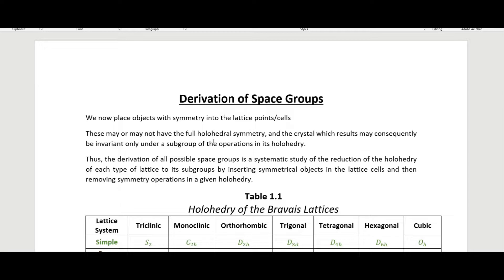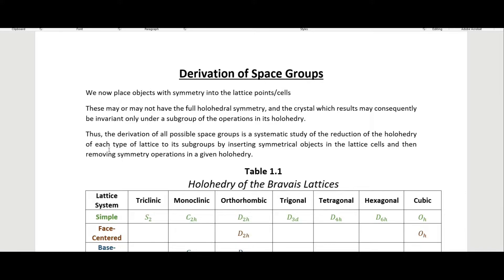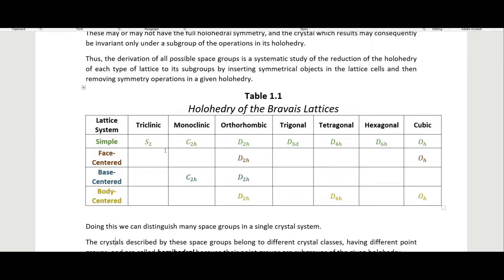These objects may or may not have the full holohedral symmetry in the crystal, which consequently may be invariant only under a subgroup of the operations of its holohedry. Thus the derivation of all possible space groups is a systematic study of the reduction of the holohedry of each type of lattice to its subgroup by inserting symmetrical objects in the lattice cells, then removing symmetry operations in a given holohedry. Remember, we got a table in the last video of the holohedry of the Bravais lattices.